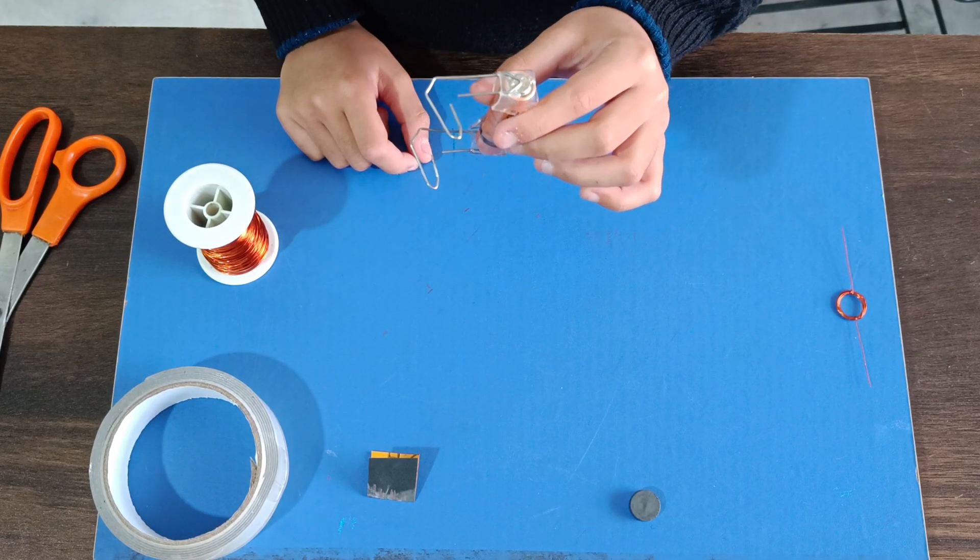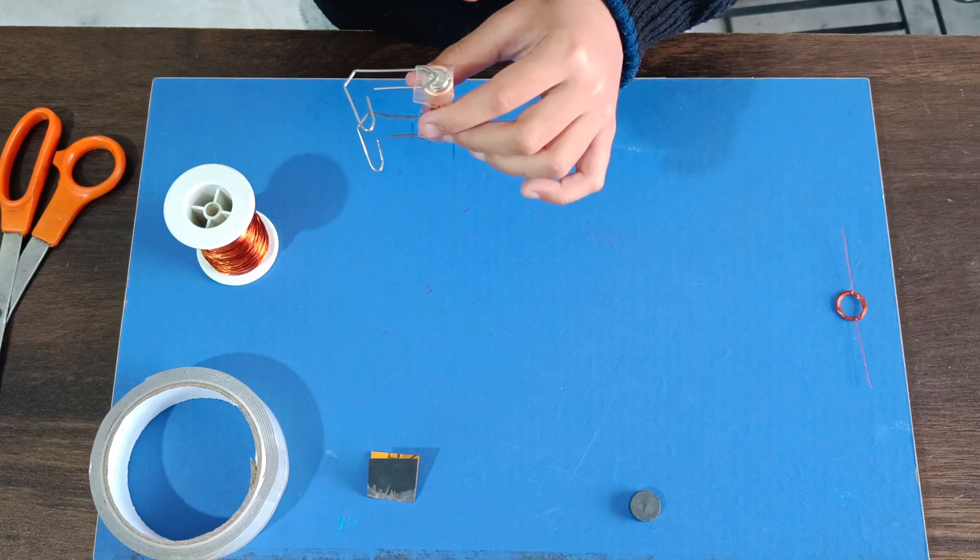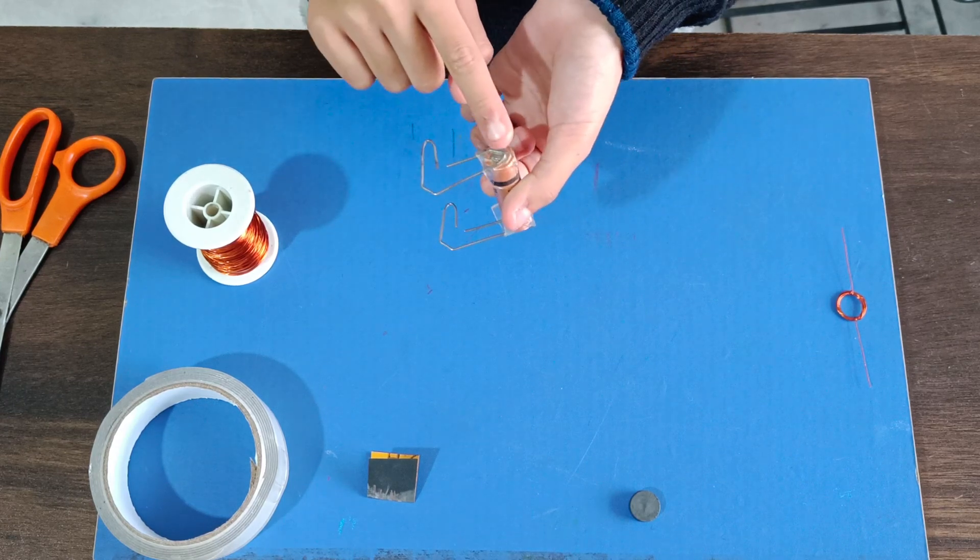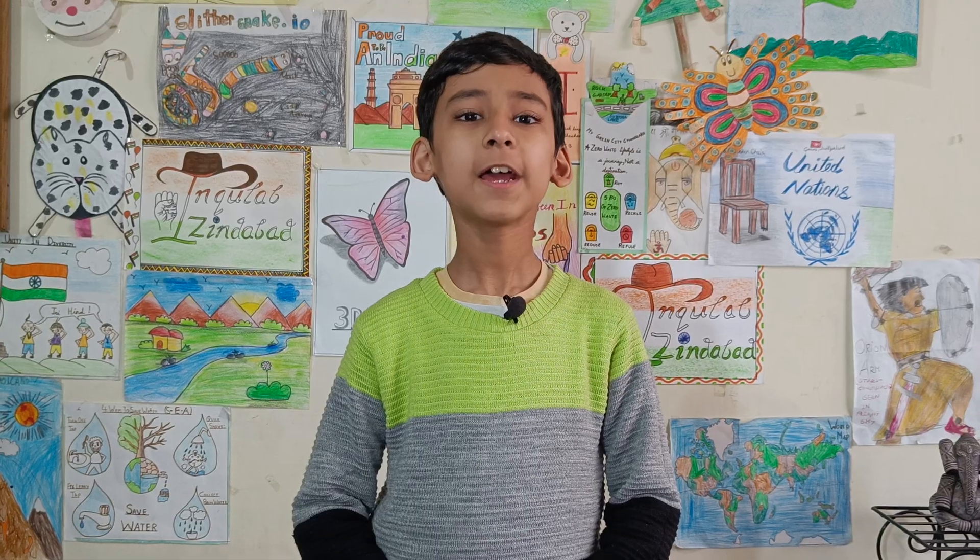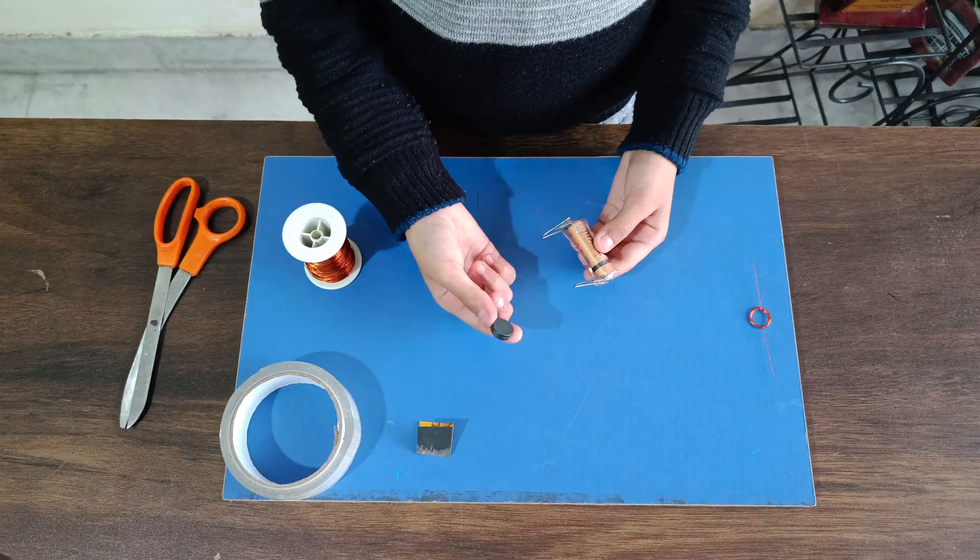This way, current from battery passes through these clips. Now, we will stick the round magnet to the battery like this.